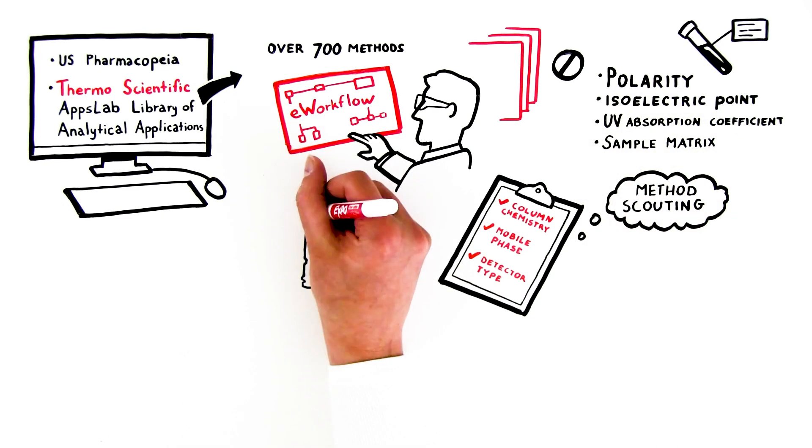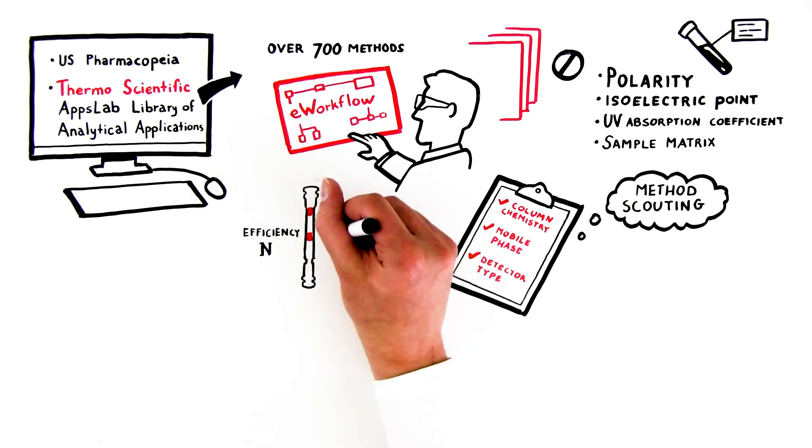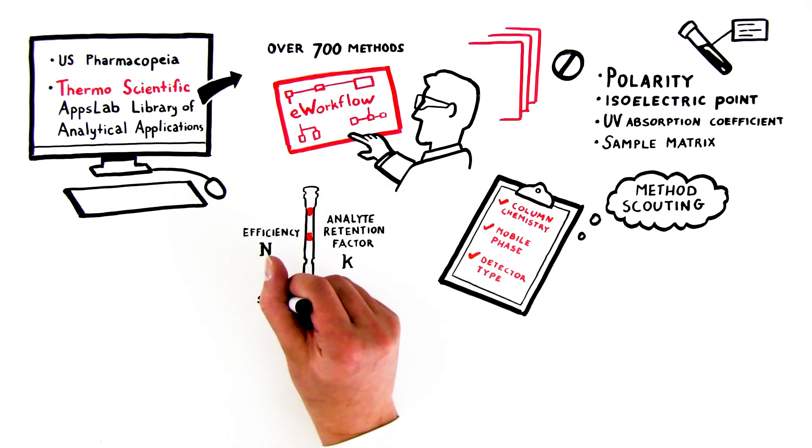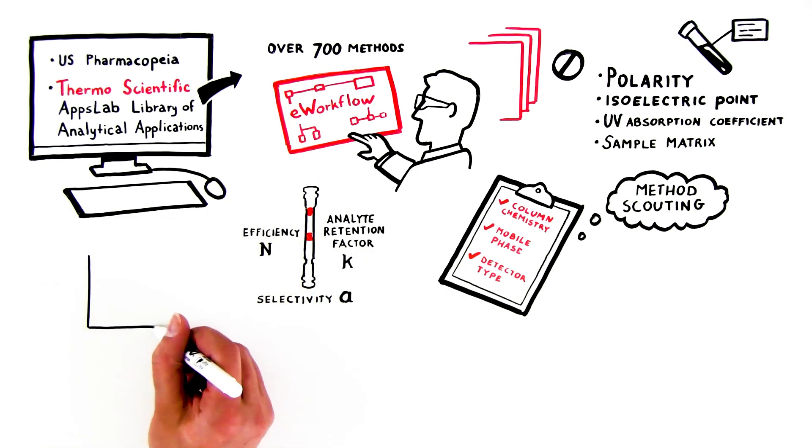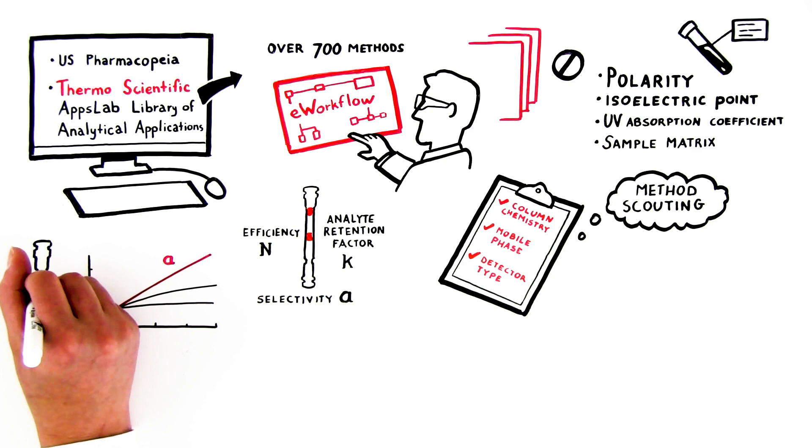Three factors determine how well two analytes are separated: efficiency, N; analyte retention factor, K; and selectivity, alpha. Selectivity has the largest impact on peak resolution and is dictated by column chemistry and mobile phase composition.